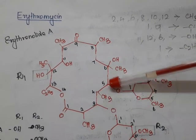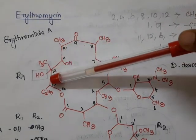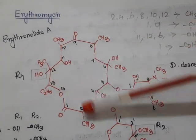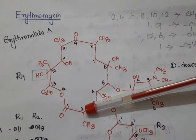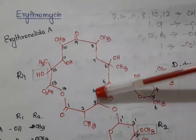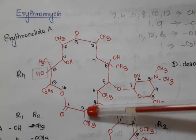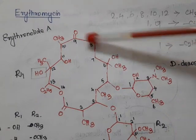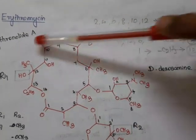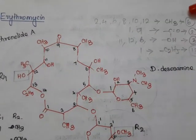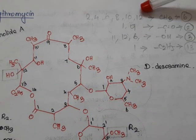The ring is numbered 1 to 14, making it a 14-membered lactone ring. It has methyl groups at the 2nd, 4th, 6th, 8th, 10th, and 12th positions — so 6 methyl groups in total at positions 2, 4, 6, 8, 10, and 12.